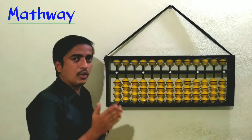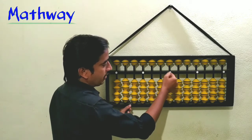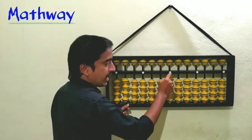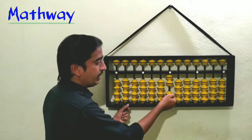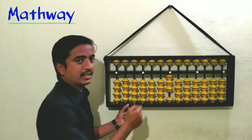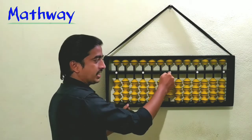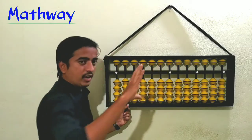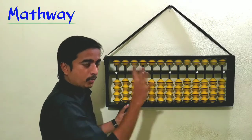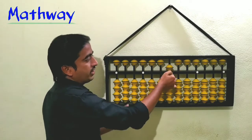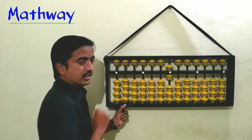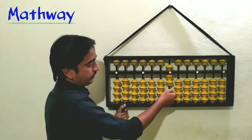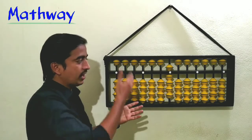Let me show the ones place again in detail. If one bead in the ones place is connected to the answer line, the value is one. Two beads connected is two, three beads is three, four beads is four. The upper bead represents five — make the ones place zero and connect the upper bead to the answer line for five. Six is five plus one, seven is five plus two, eight is five plus three, and nine is five plus four.